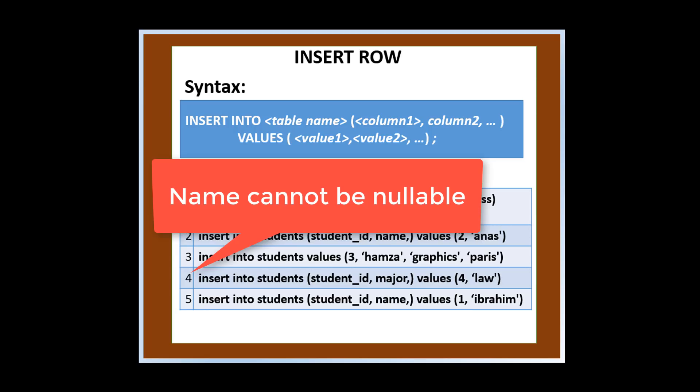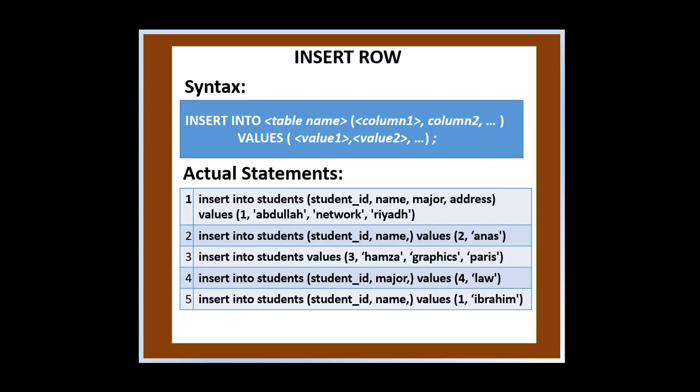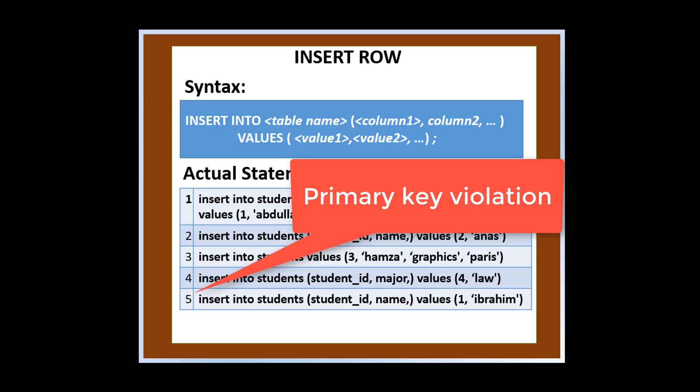Number four is wrong because it did not include name column which cannot be nullable. Number five is wrong because student ID is a primary key. So rows one and five cannot have the same student ID of one.